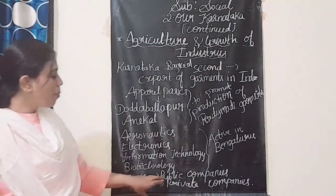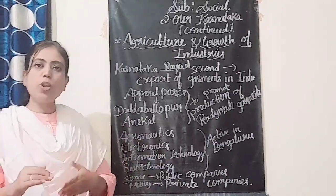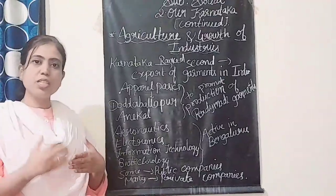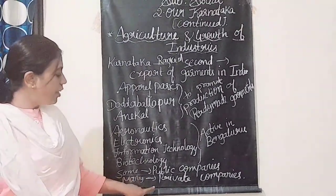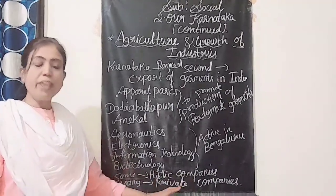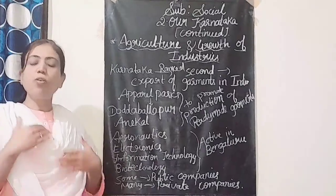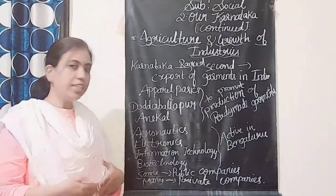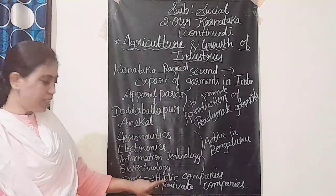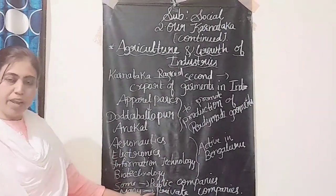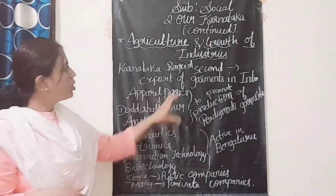Some industries are public companies, meaning they are under the control of the government, with all workers and operations managed by government. Many private companies also exist, where an individual can open an industry and whatever profit or loss occurs belongs to that private owner.